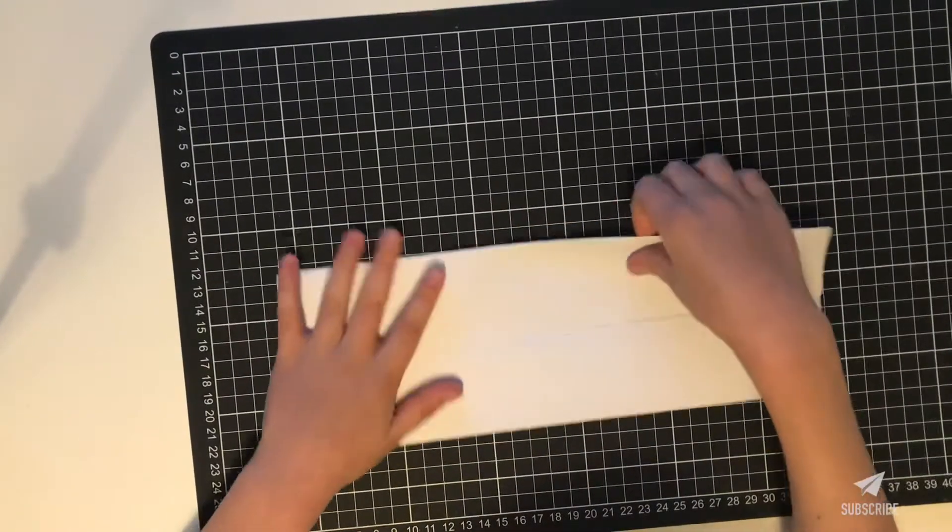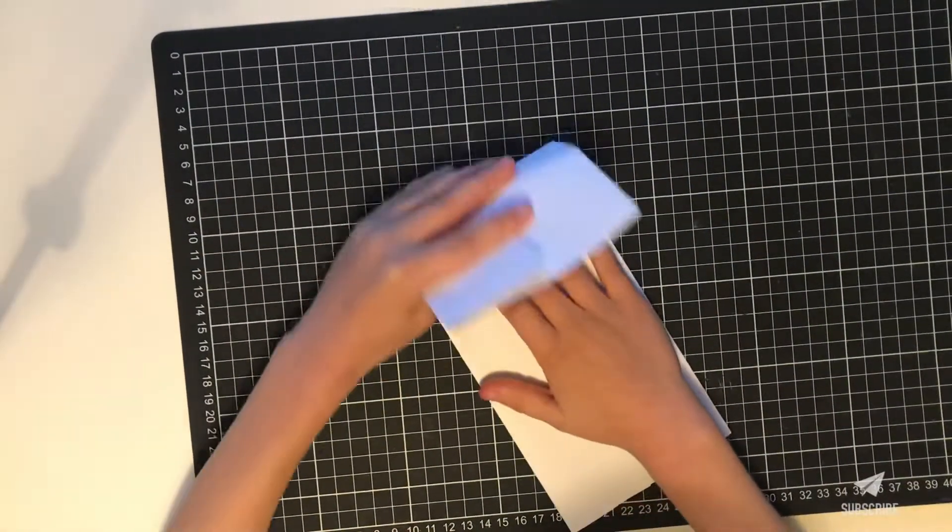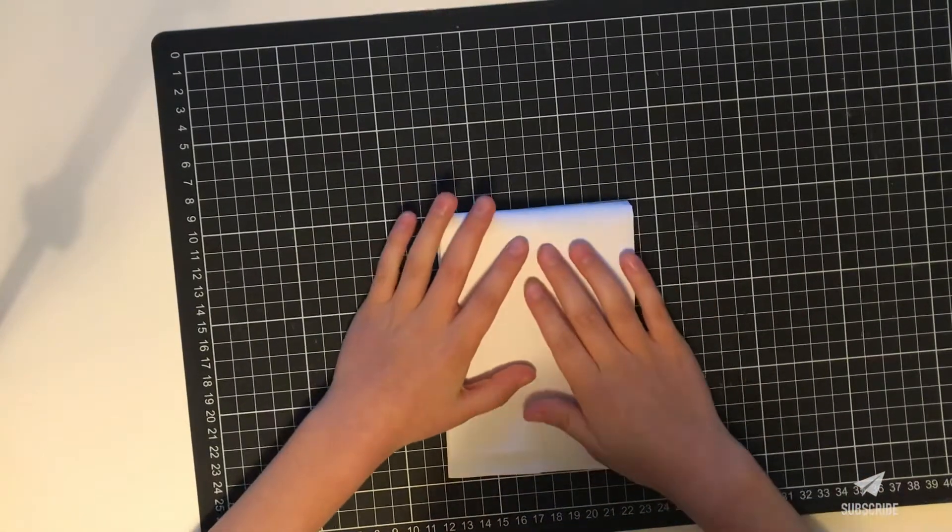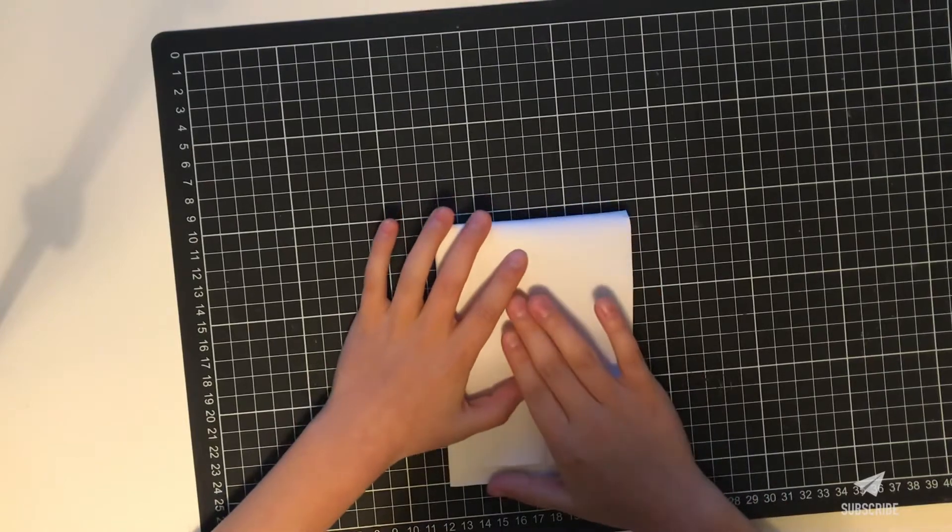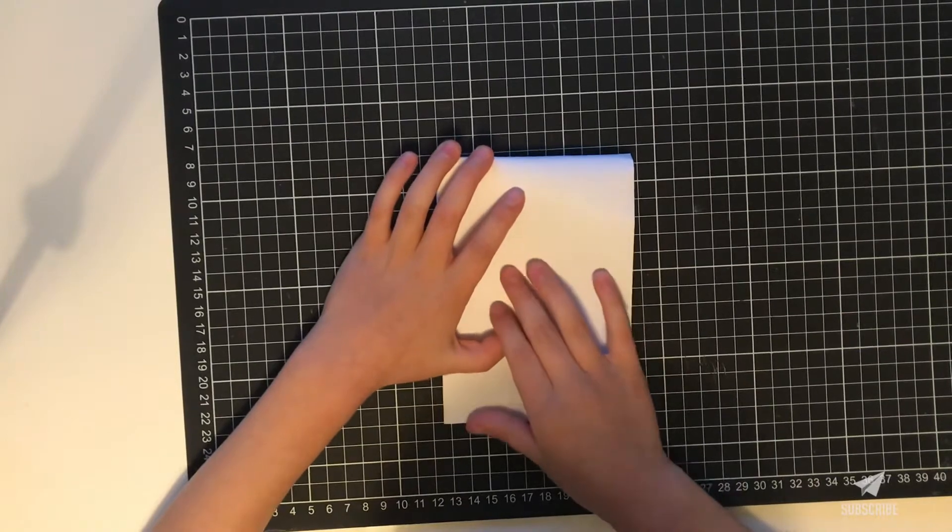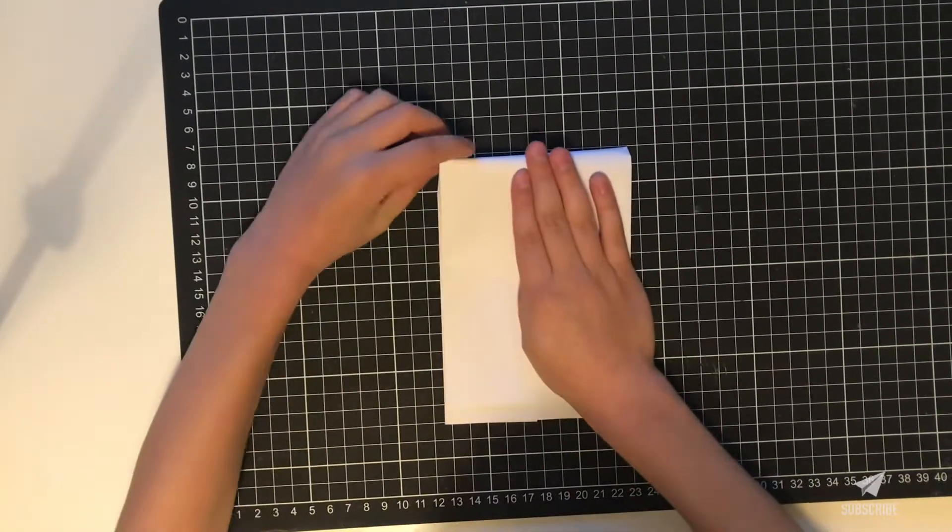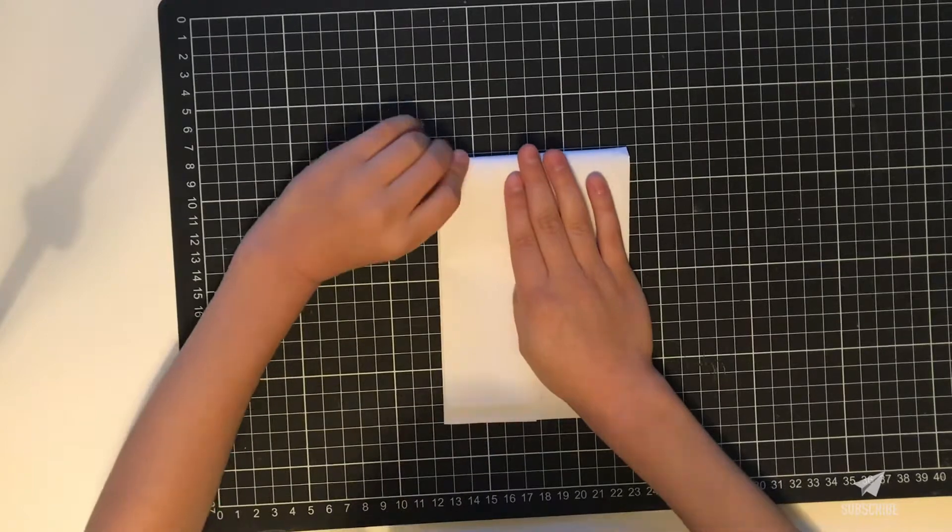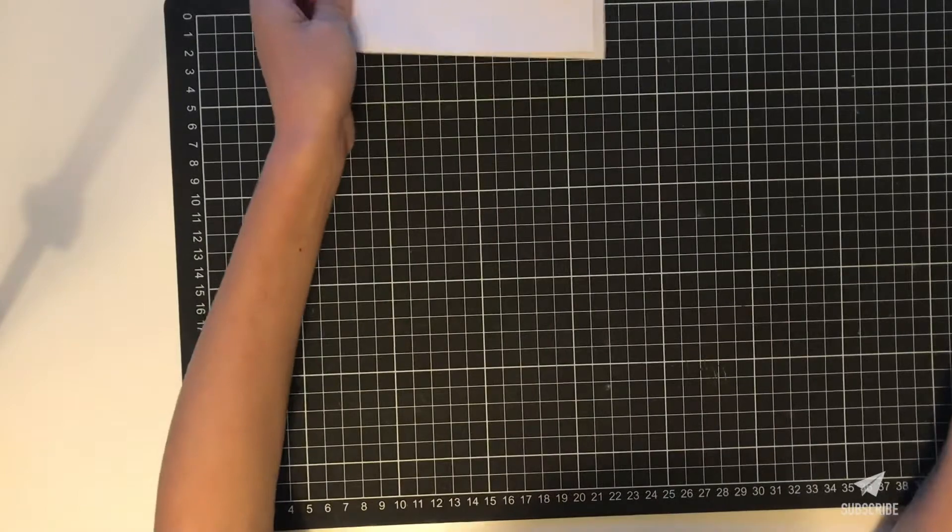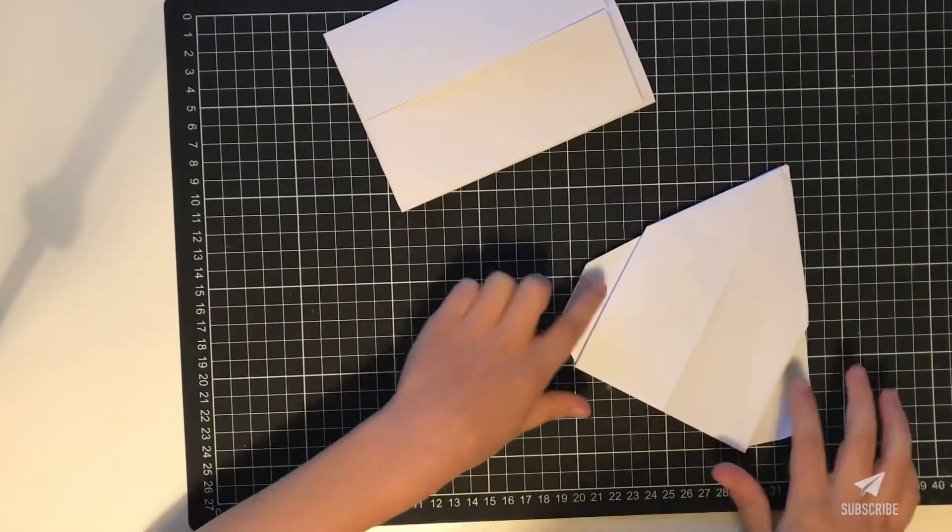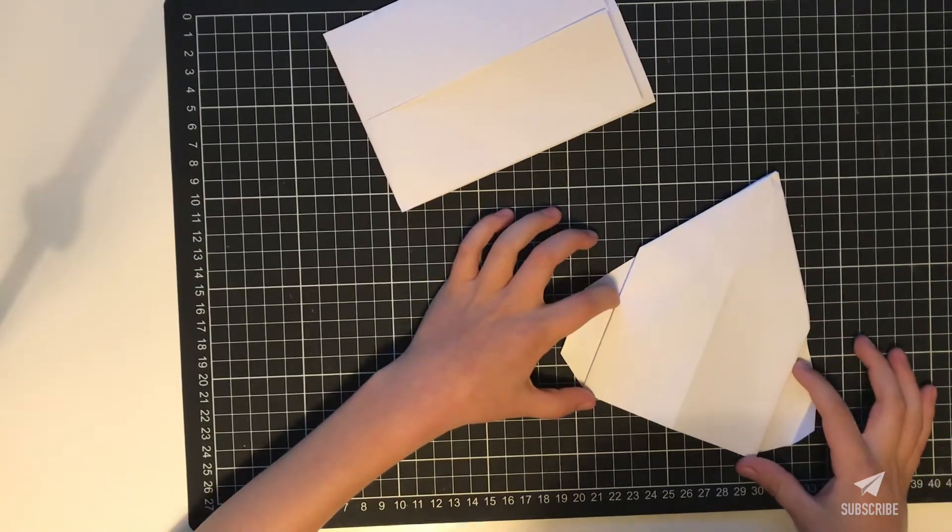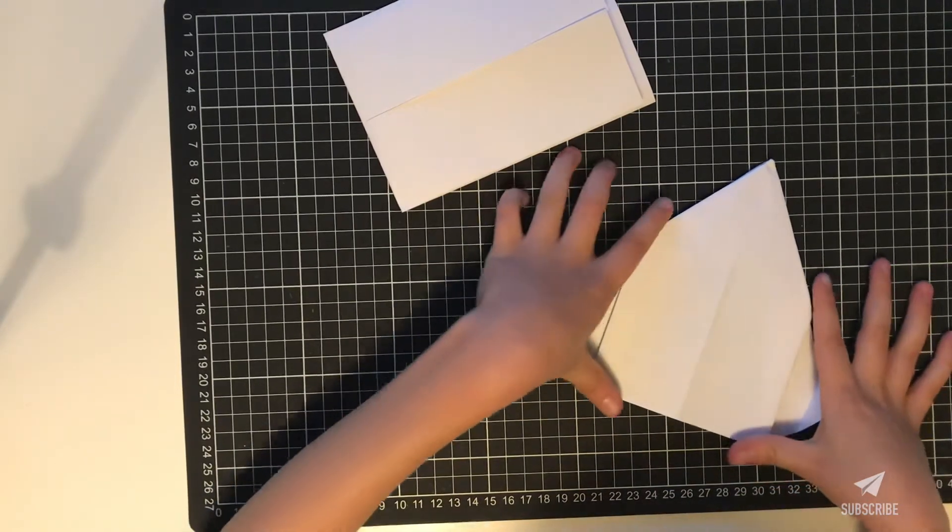Now we're going to fold it to the bottom. But this is the way I do it: you leave a small gap under so you can make the wings like this. Otherwise it will be smaller like this or bigger like this.